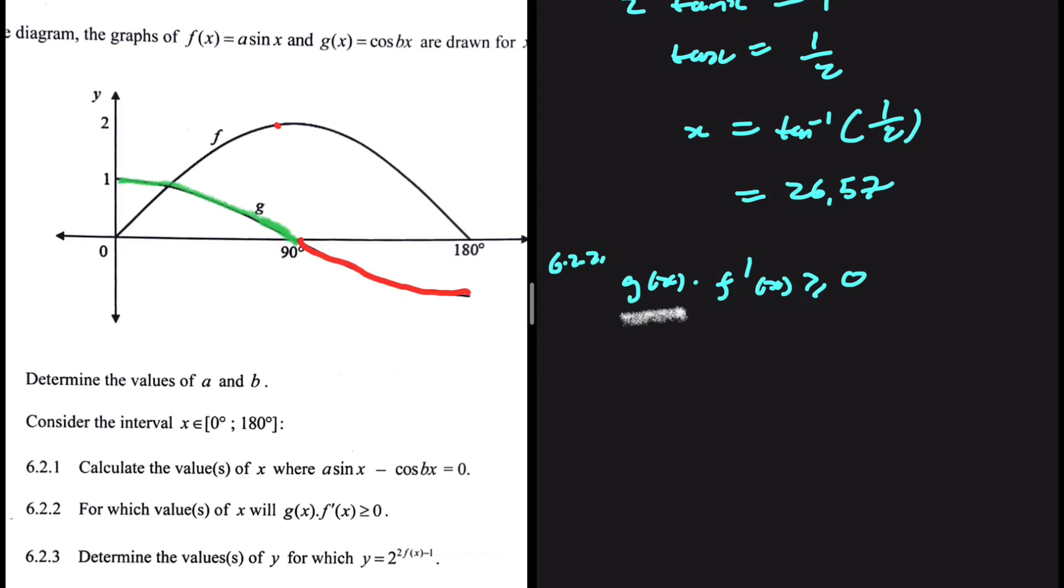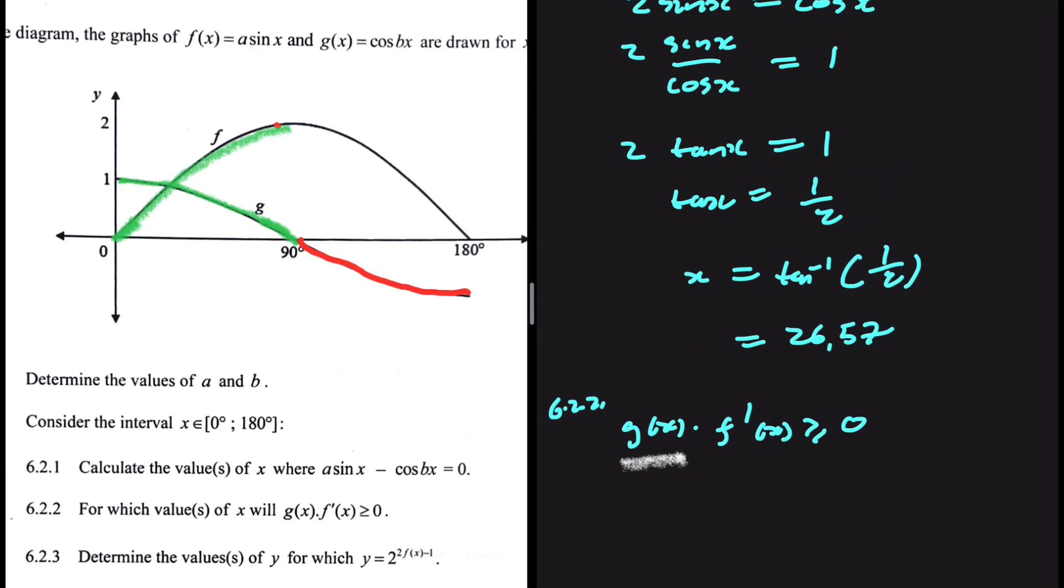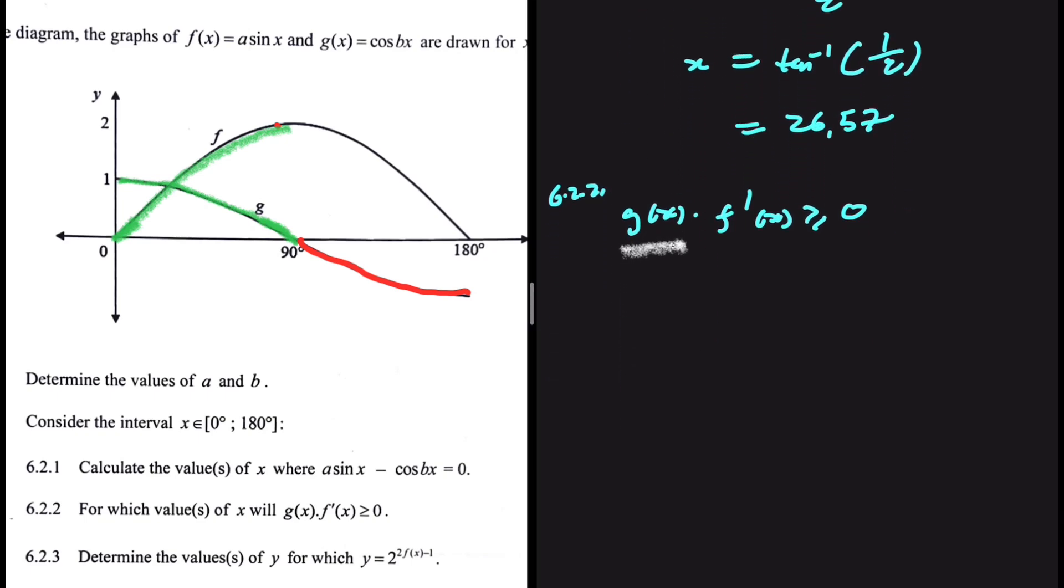When is our gradient sloping up? From this point up to x equals 90, we have a positive slope. And then from x equals 90 to x equals 180, we have a negative slope.